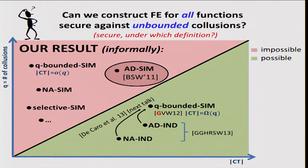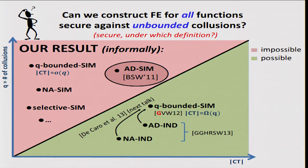Let me mention the follow-up work. There is a construction by Sanjam Garg and others which actually constructs adaptive and non-adaptive indistinguishability-based functional encryption under some non-standard assumptions for now, but it's still a big breakthrough. Moreover, in the next talk you're going to see that you can take a construction satisfying these definitions and transform it into one satisfying the simulation notion of security, which is a stronger notion, however you pay a price by setting the bound Q on the number of collusions supported.